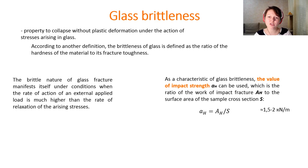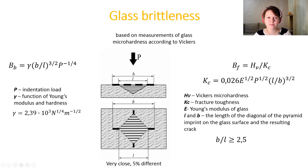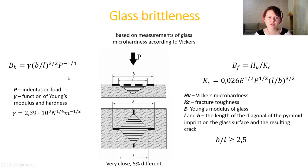As a characteristic of glass brittleness, the value of impact strength can be used. Based on two definitions of glass brittleness, we can provide two different equations for its calculation. Using the same micro-hardness experiment according to Vickers but applying different formulas, we find that these two values are very close — differing by only about 5%.